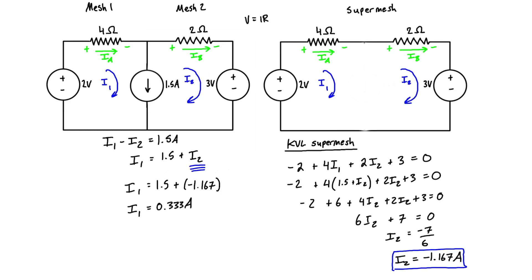So if the problem asked you to find the mesh currents, that would be the answer. We have I1 and I2, but if the problem asked you to find the branch currents, it would be asking for the green values here. And we pretty much have the answers already, but we'll just double check to make sure. So IA is equal to I1. So I1 is equal to 0.33 amps, going positive in this direction. We can label it on as being equal to 0.333 amps going to the right.